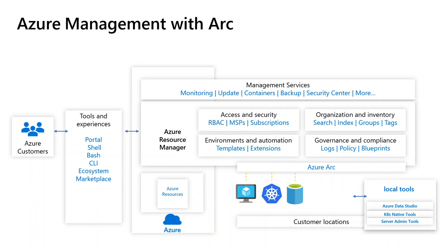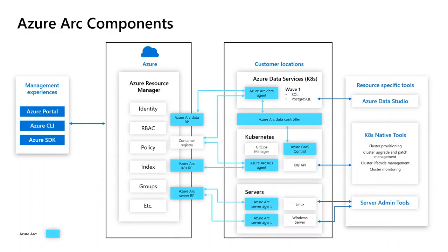We're not going to discuss Azure Arc for servers or databases — we're going to focus on Azure Arc for Kubernetes. When you have Kubernetes clusters running on-premises or in other cloud environments, you install some components on them that connect them to the Azure cloud and the Azure Resource Manager model. Once connected, you'll see an object in the Azure portal representing that cluster.